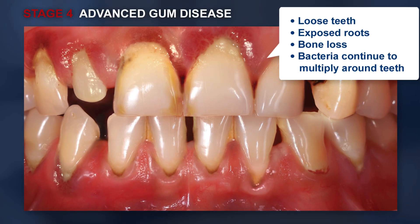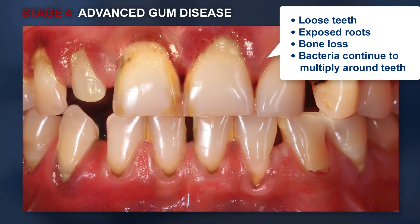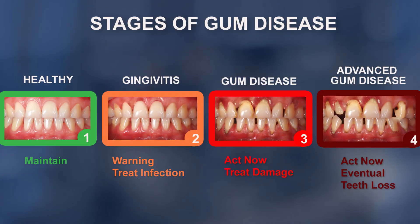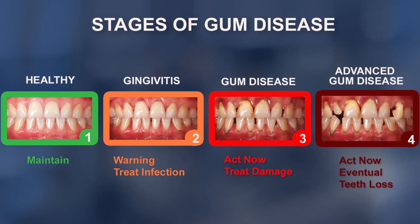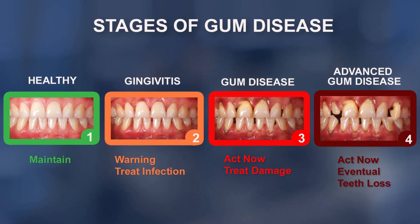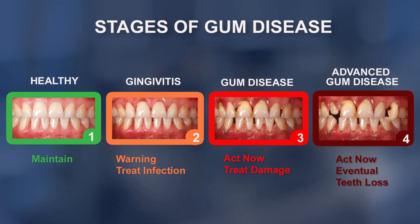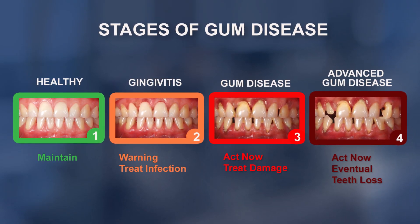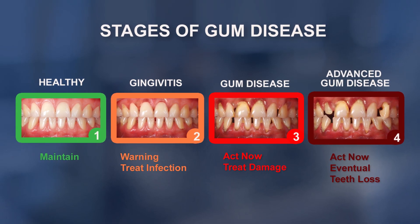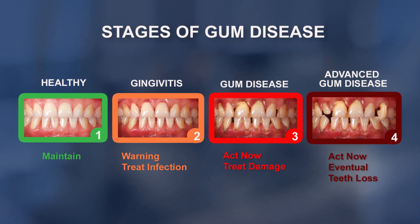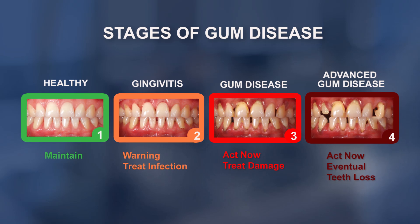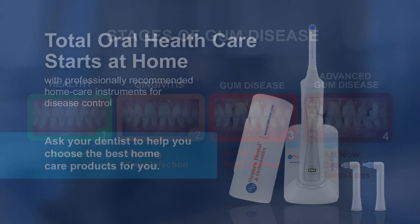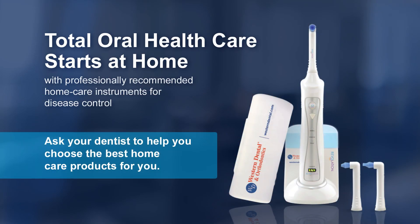A consultation with a periodontist or gum specialist may be scheduled for further regenerative procedures. In all cases, gum disease is a treatable condition, and if detected early can be reversed with good patient home care and periodic recall visits. The more advanced forms of gum disease cannot be fully reversed, and treatment becomes costly and time-consuming. Your doctor will recommend the most effective course of treatment for your particular condition.